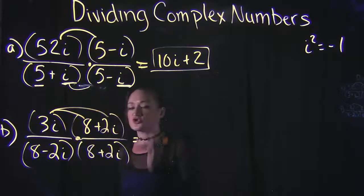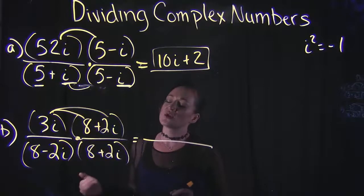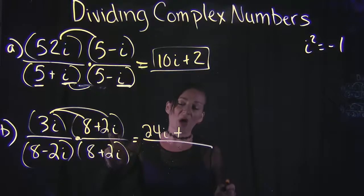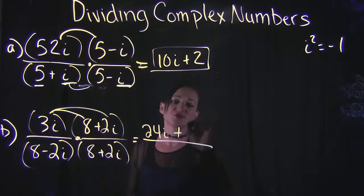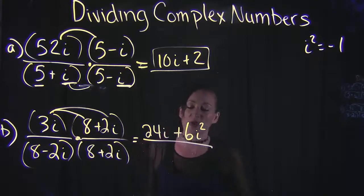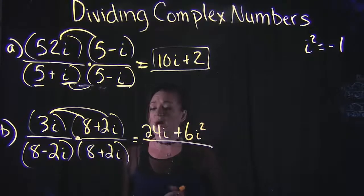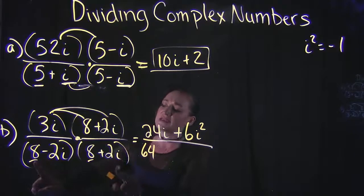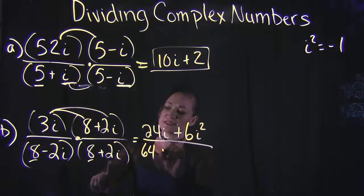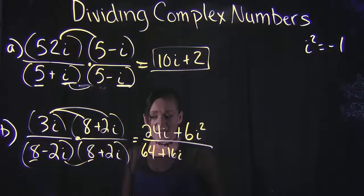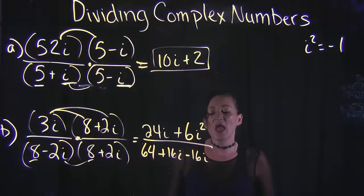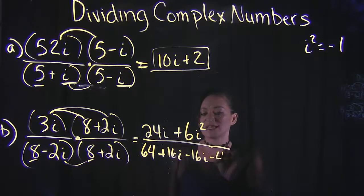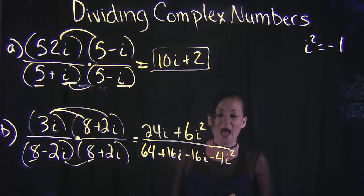Distributing the numerator: 3i times 8 gives us 24i, plus 3i times 2i gives us 6i squared. FOILing the denominator: first 8 times 8 is 64; outside 8 times 2i is 16i; inside negative 2i times 8 gives negative 16i; and last negative 2i times positive 2i gives negative 4i squared.